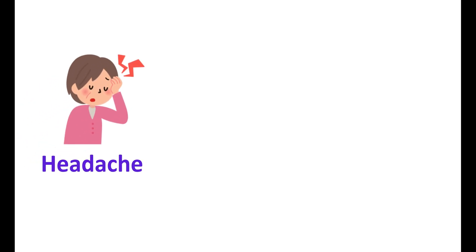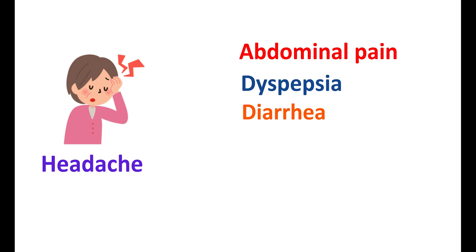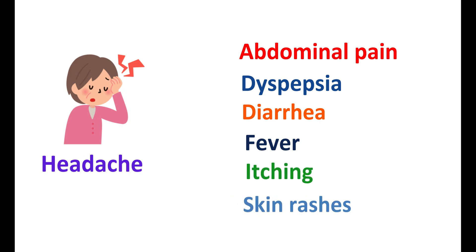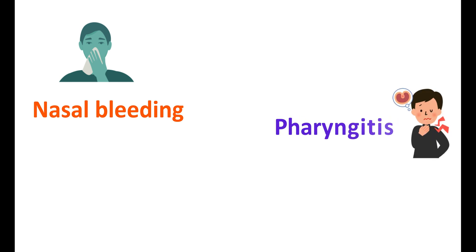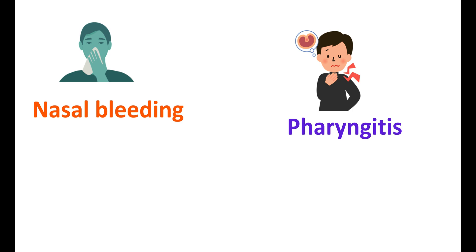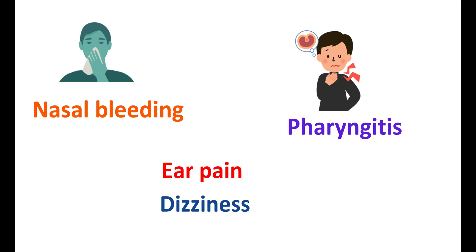One of the common side effects of Montelukast is headache. Other side effects include abdominal pain, dyspepsia, and diarrhea. Dehydration associated with diarrhea can be controlled by intake of plenty of fluids. In a few people, Montelukast can also produce fever — for treating this fever, never take aspirin, as it may increase bronchospasm; instead, take paracetamol. Other side effects include itching, skin rashes, and nasal bleeding on repeated usage. This medication can also be associated with upper respiratory tract infections like pharyngitis, causing sore throat and difficulty swallowing, as well as ear pain and dizziness.